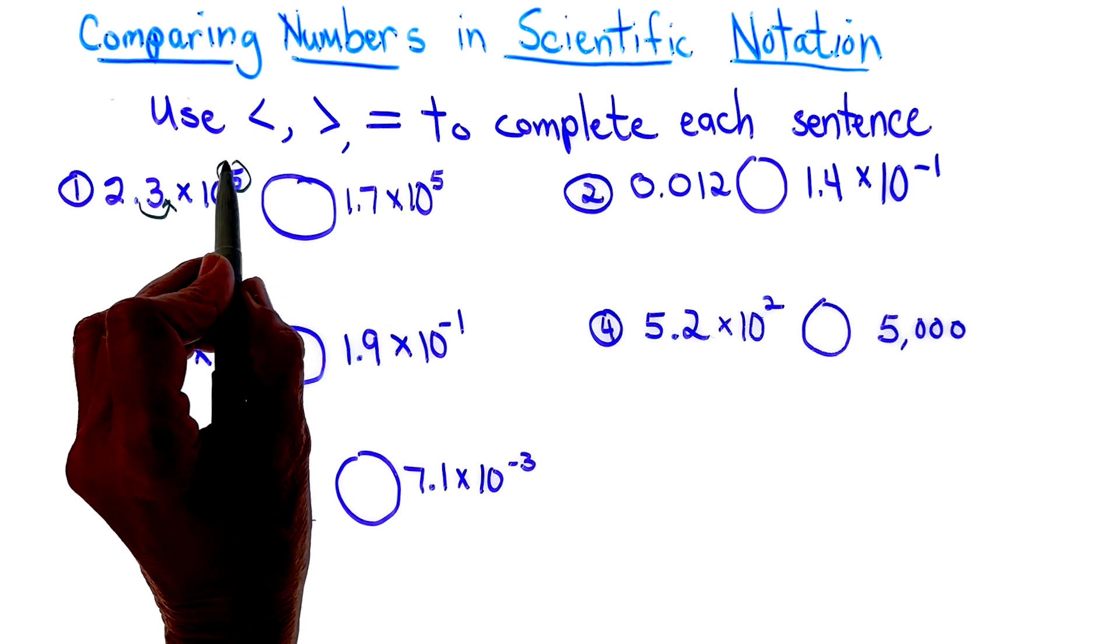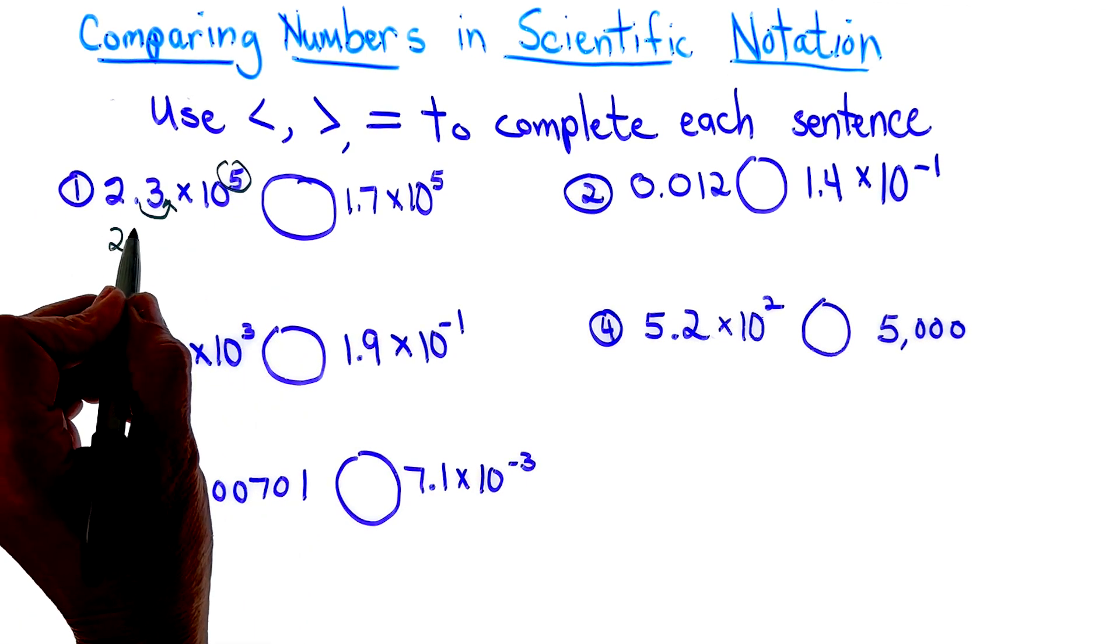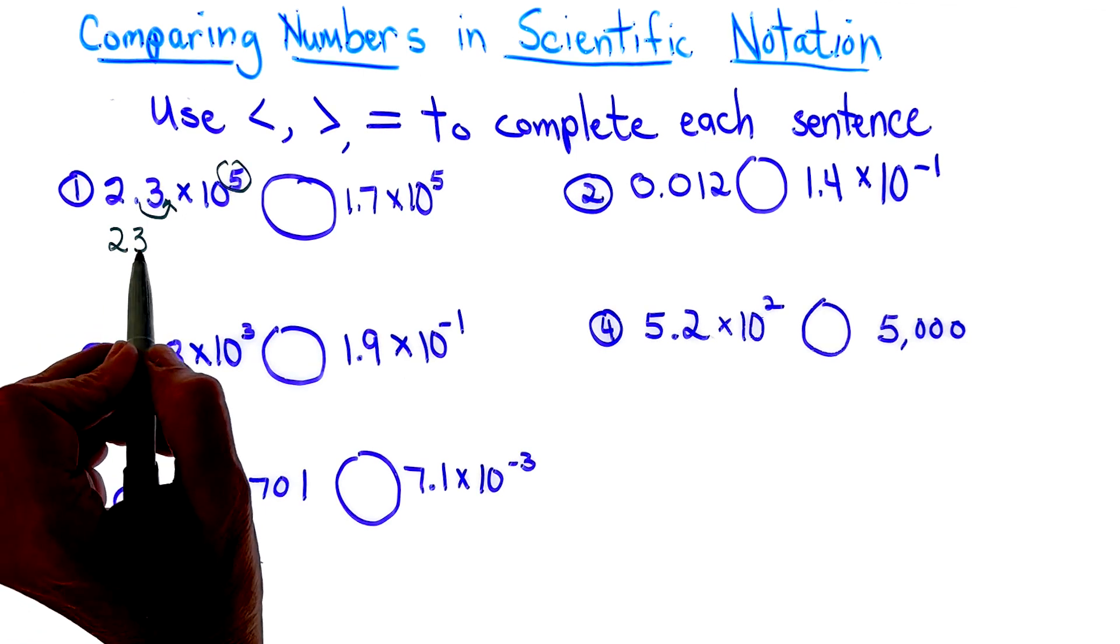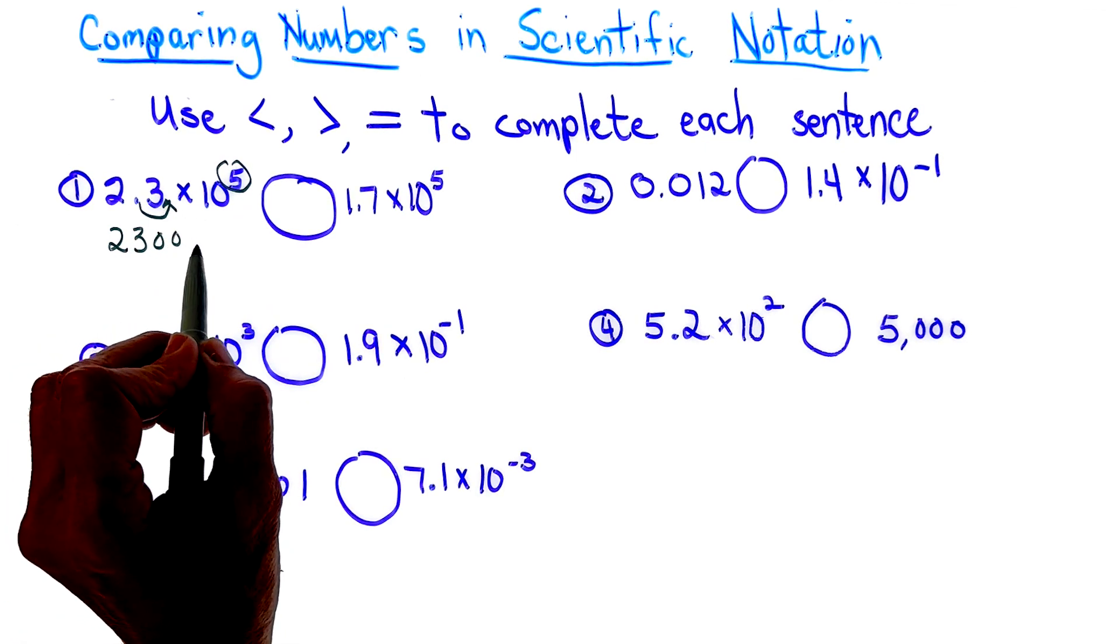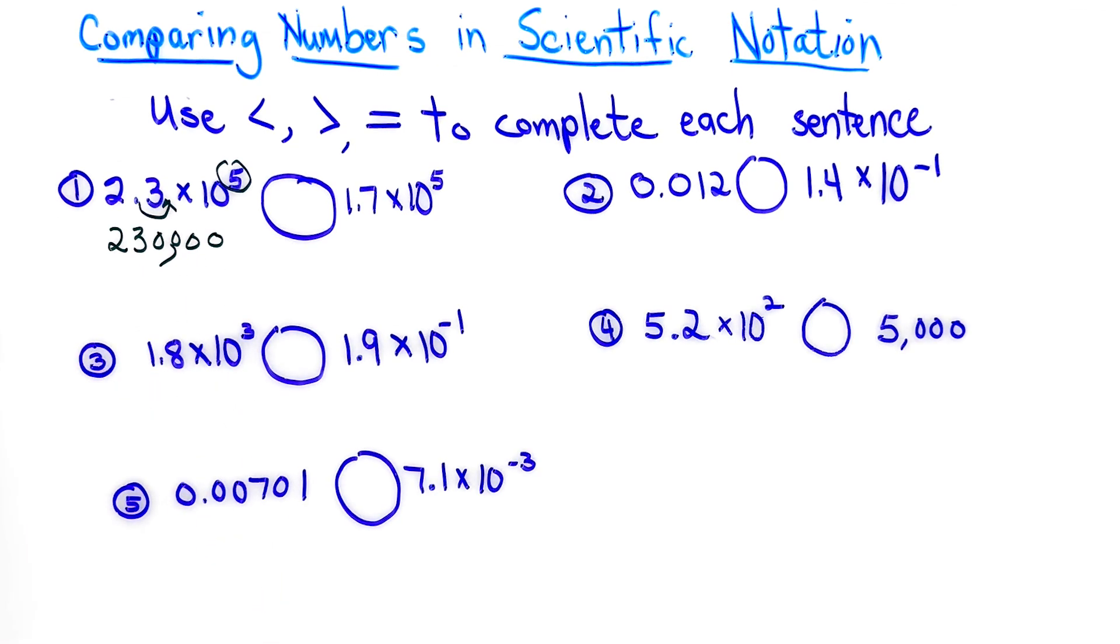Well, when it's to the fifth power, that means I'm going to have a large number. So here's my 2, here's my 3, and I used one of my places. So now I'm going to add four zeros. And when I do, I get 230,000.